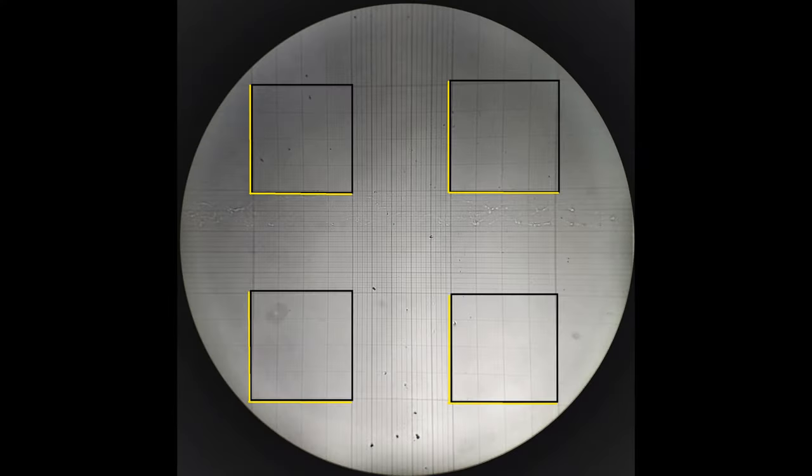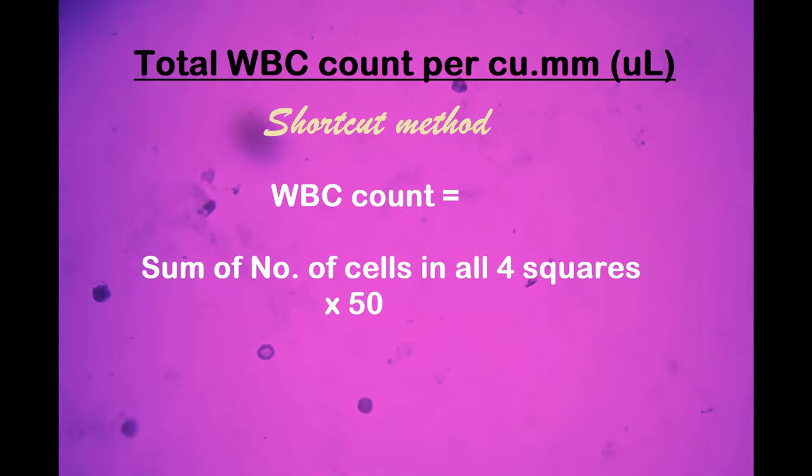Once you've counted the number of cells in the four squares, the 64 smaller squares, all you have to do is just add them up and multiply the sum by 50. This gives you the total WBC count per cubic millimeter of blood sample.